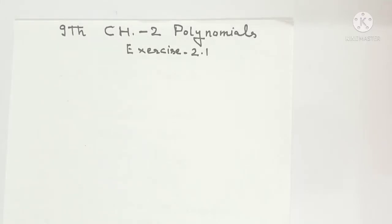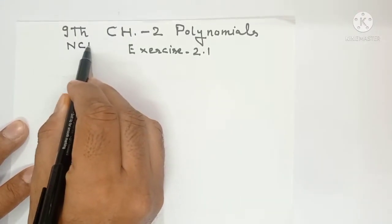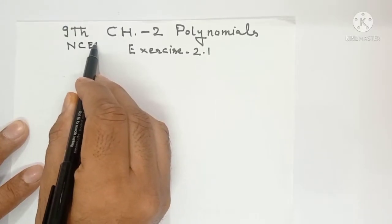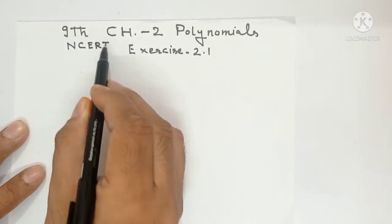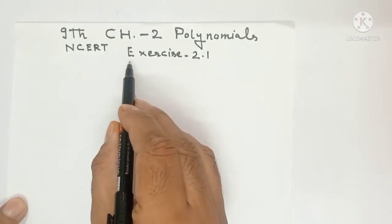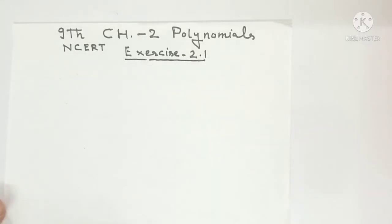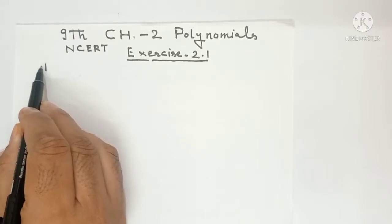Hello everyone, in this video I am doing chapter number 2 polynomials of class 9th NCERT and we have already done introduction of this chapter and all the basic terms related to this chapter in my previous video. In this video I will do the complete exercise number 2.1 with the easiest explanation. So let's start doing the questions.